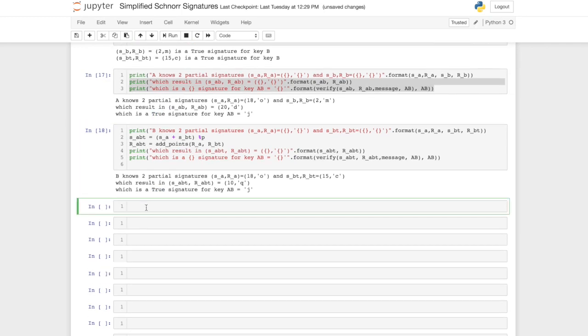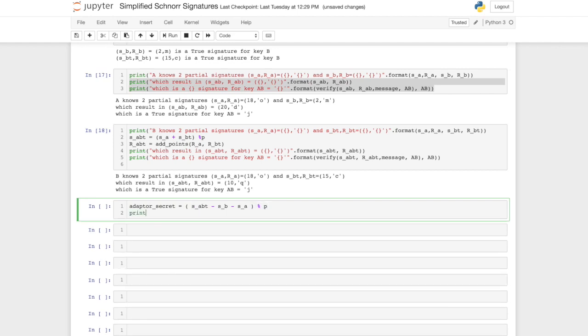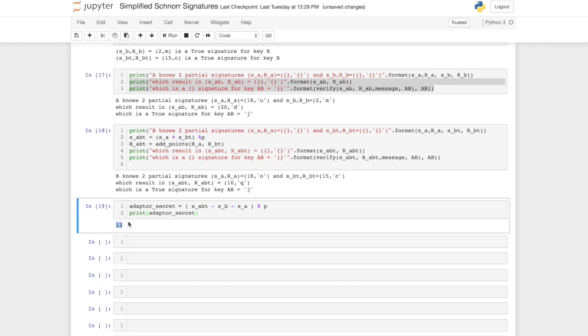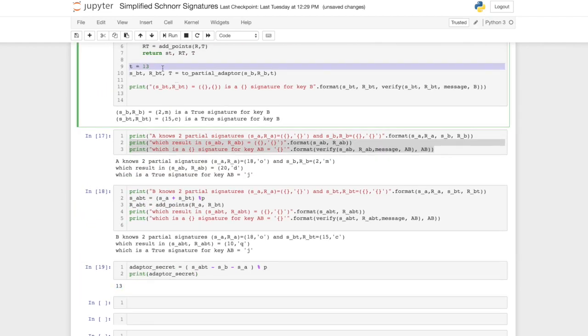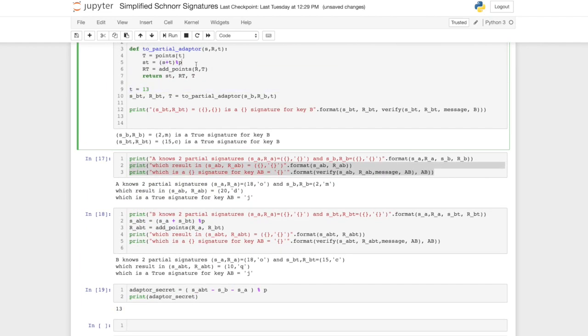Now we compute the adapter secret by taking the multi-signature that b computed and subtract the partial signature of b and the partial signature of a. And again we have to do the modular operation. And we see the adapter secret is 13, which was exactly the adapter secret that we wanted to use. Now we have a problem.